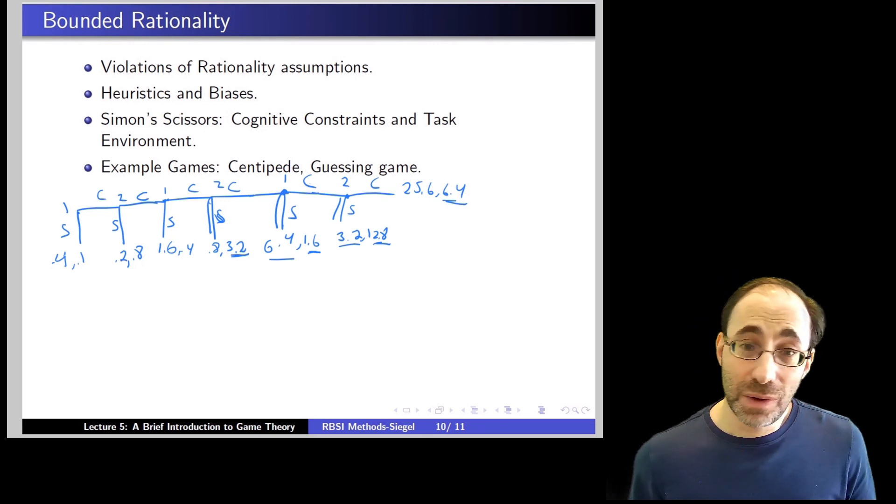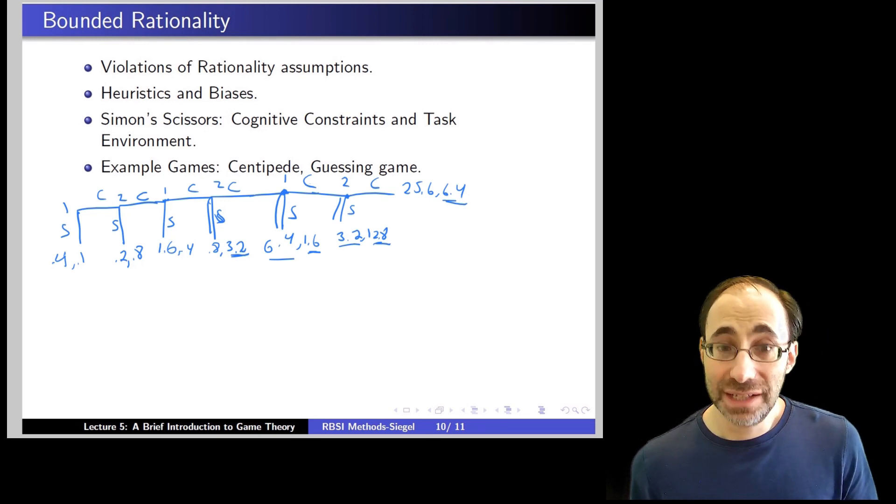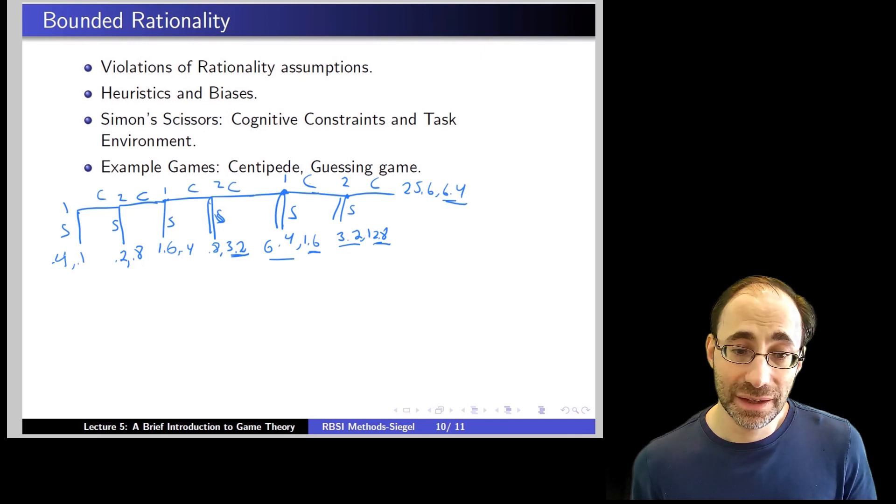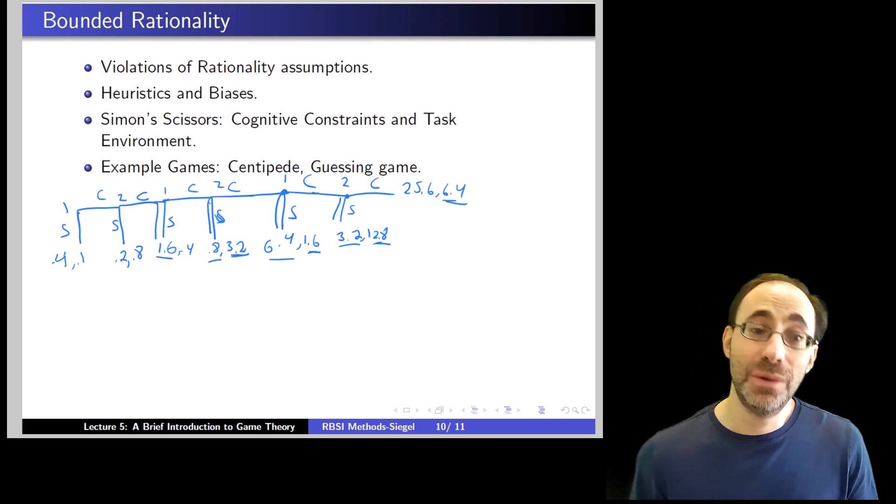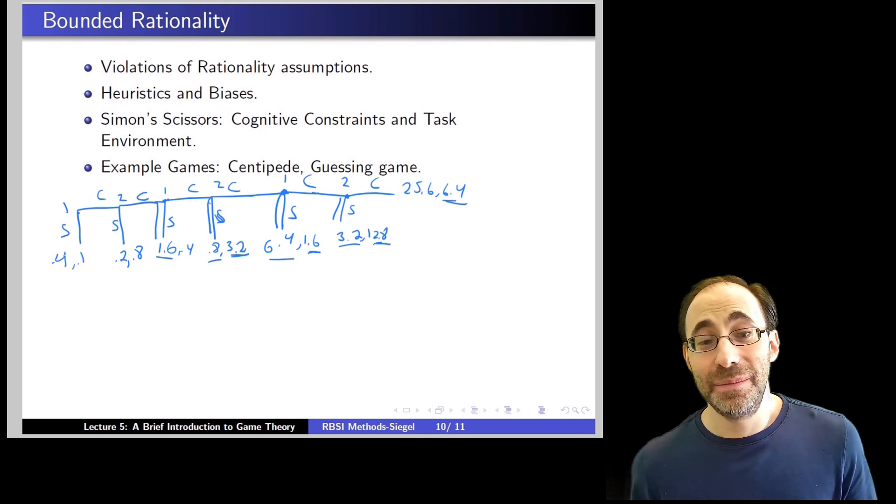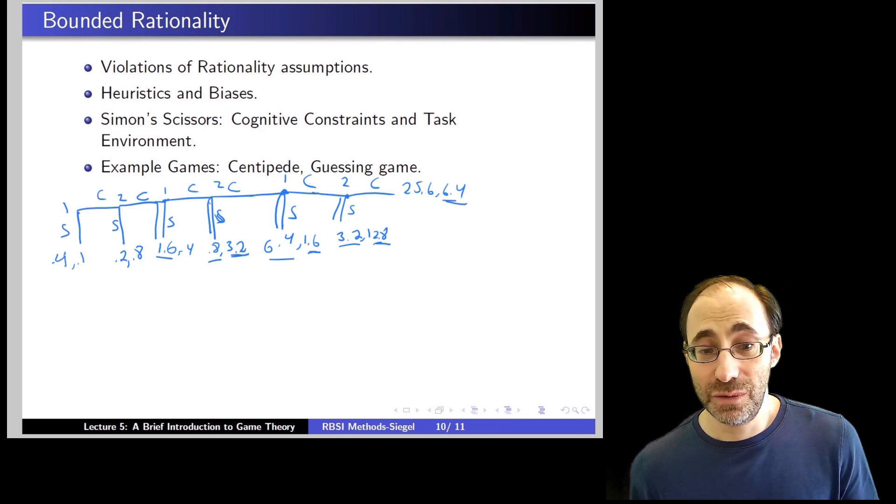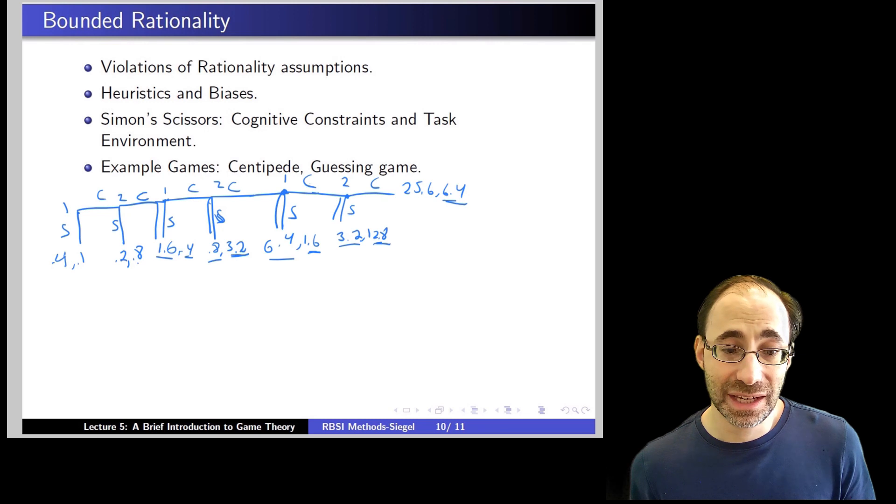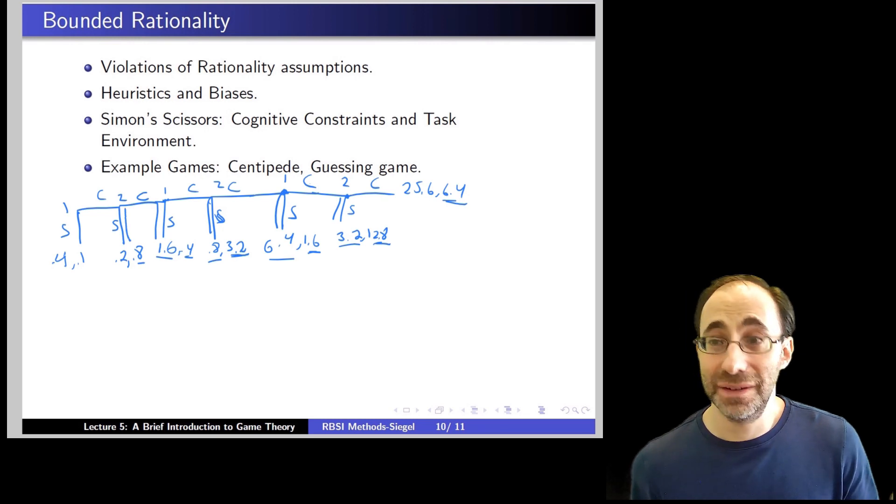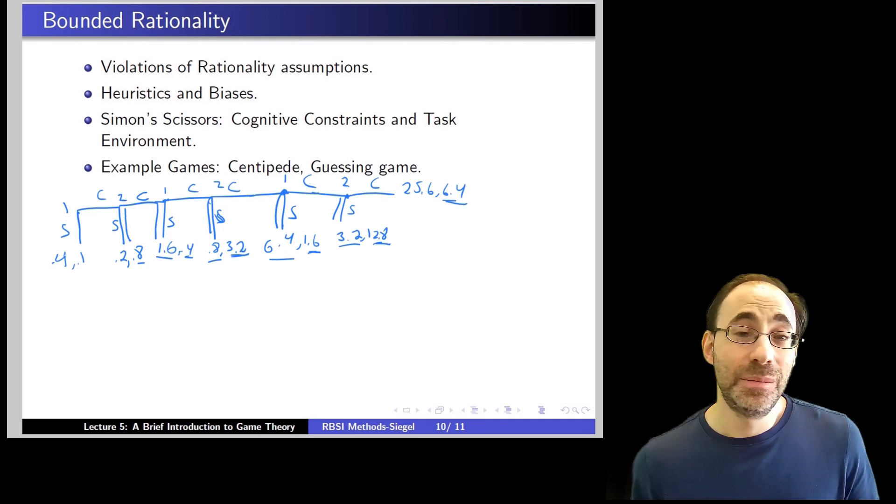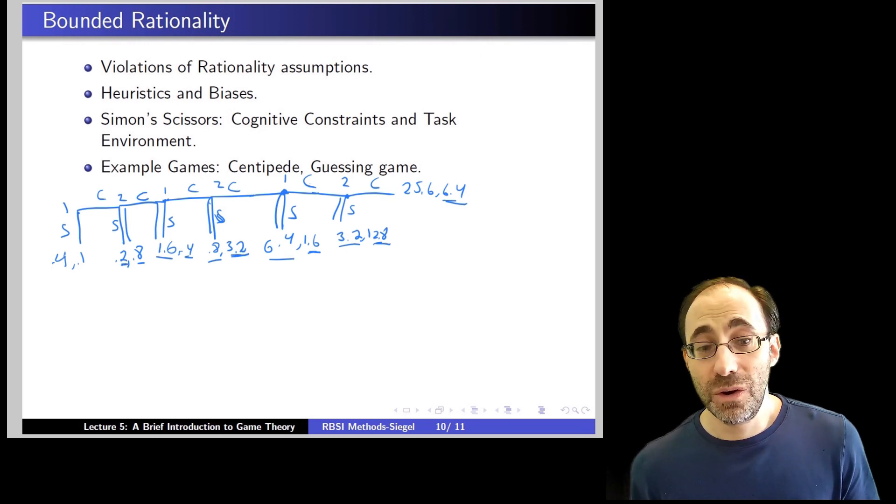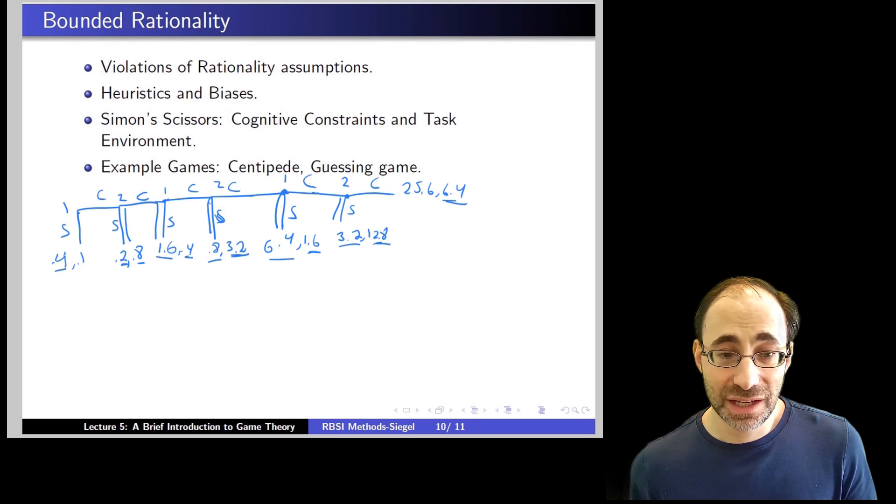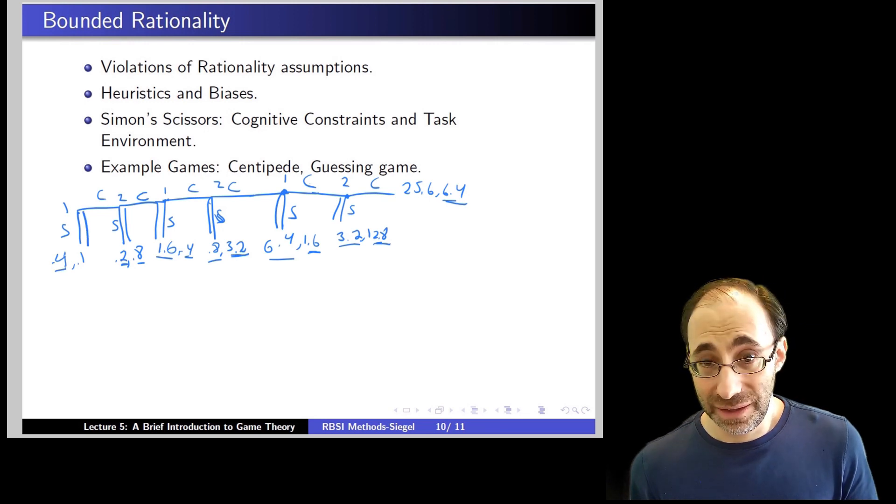Back one more step. Player one can continue and get $0.80, or stop immediately and get $1.60, so player one should stop. Back one more step. Player two can continue and get $0.40, or stop and get $0.80, so player two should stop. And of course, in the first stage, player one can continue, in which case player two will stop and player one gets $0.20, or player one can stop immediately and get $0.40, so player one stops immediately.